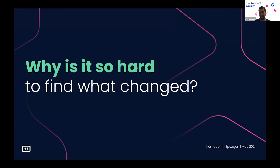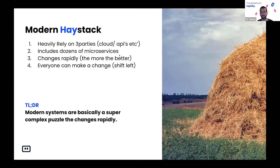So hopefully I've convinced you — maybe you already know — that changes are important. When you try to solve an issue, you're a detective, basically trying to figure out what changed that can explain the problem you're facing. So why is it so hard to find what changed in your system? Today, the stack — or you can refer to it as a haystack — is very, very complex. It includes a lot of third parties, services such as auth, your cloud providers, and dozens of different REST APIs that your application is dependent upon for running correctly.